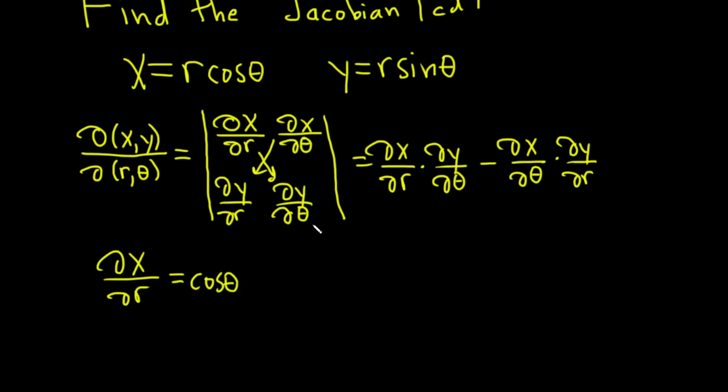And then we want del x del theta. In this case, we treat r as a constant and the derivative of cosine is negative sine. So it'll be negative r sine theta.